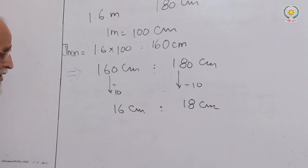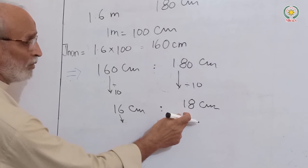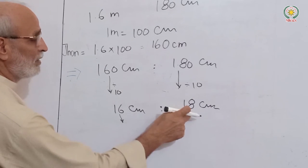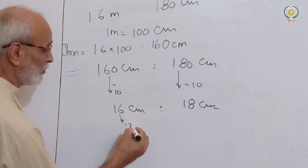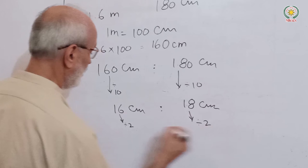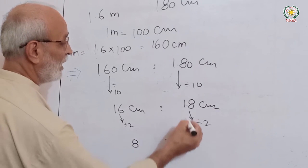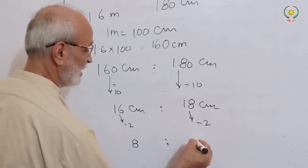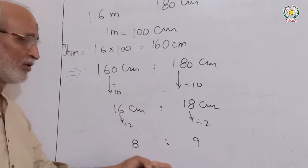We can simplify further by dividing by 2. 16 divided by 2 is 8, and 18 divided by 2 is 9. Therefore, the final ratio is 8:9.